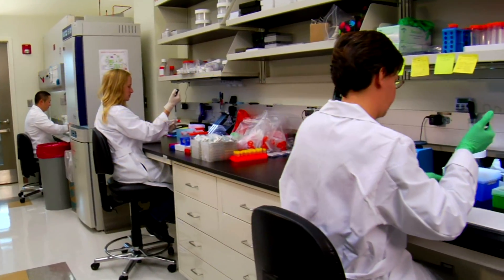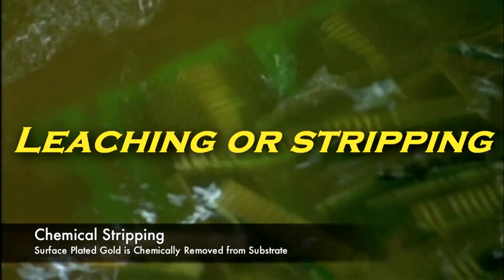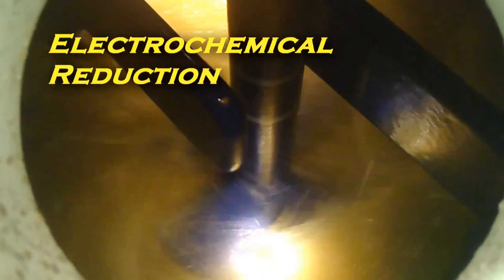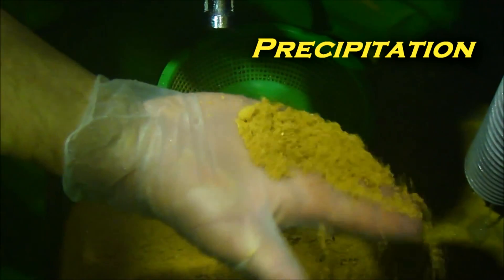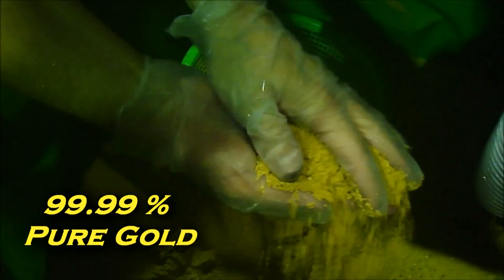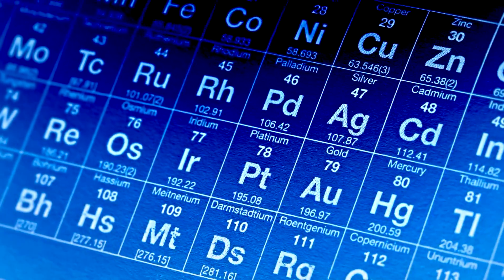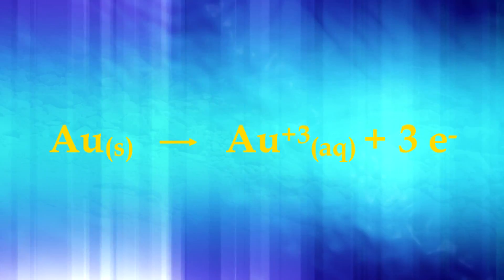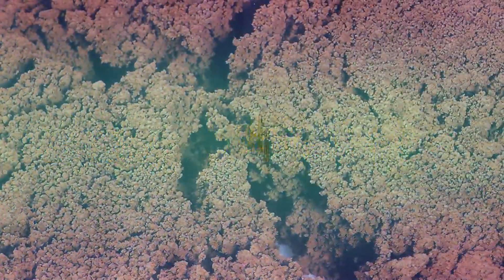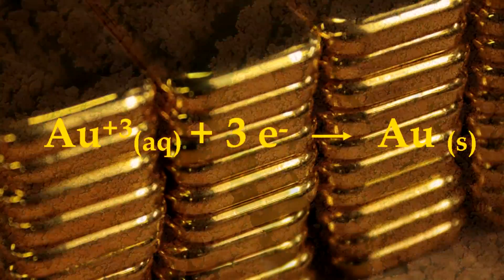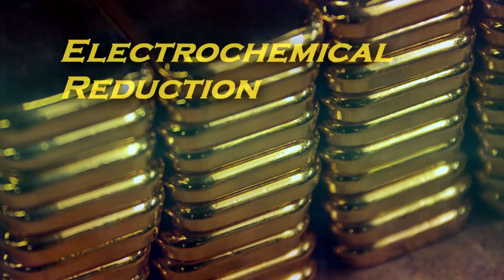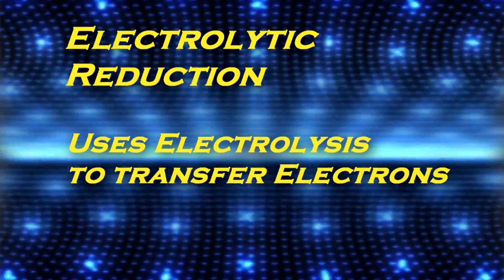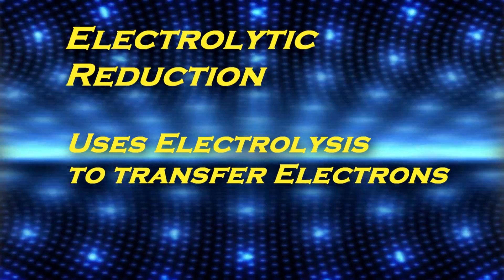Our previous hydrometallurgy videos introduced the various leaching and concentration processes as the first steps in precious metals extraction. Electrochemical reduction explained several ways to chemically precipitate the aqueous precious metal compounds back to metallic form. The precious metals were put into solution by stripping electrons to create precious metal ions which then dissolve into the solution. The processes to turn these ions back into metallic form each transfer electrons back to complete the transformation. Electrochemical reduction uses chemical reactions to transfer electrons for recovering metals, while electrolytic reduction uses electrolysis, which employs an electric current to accomplish this.